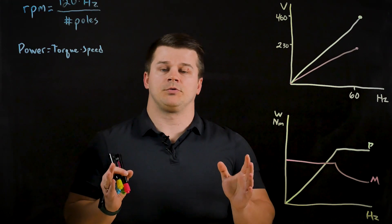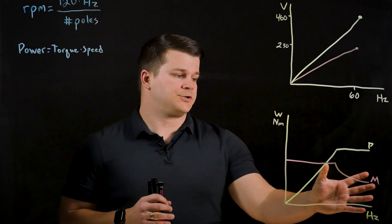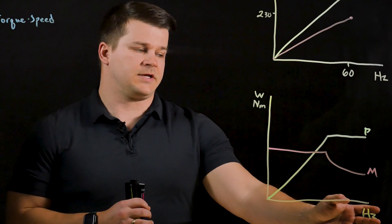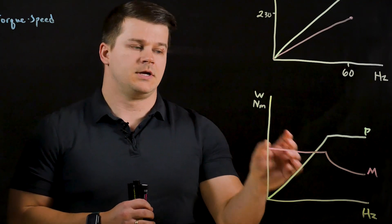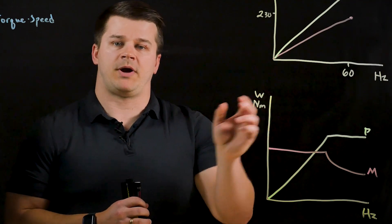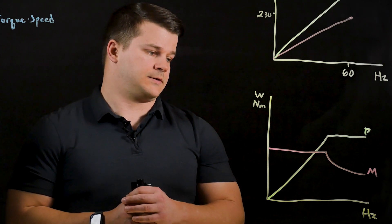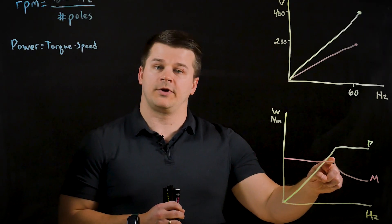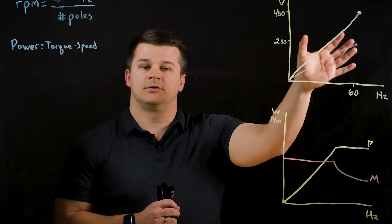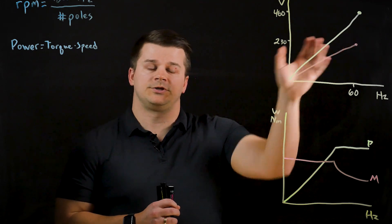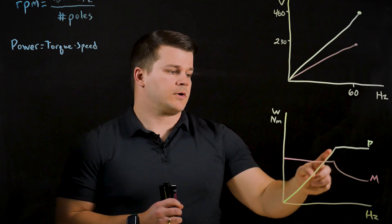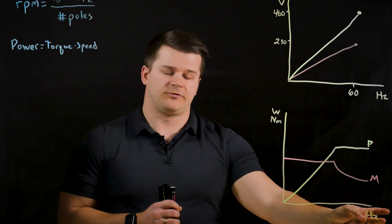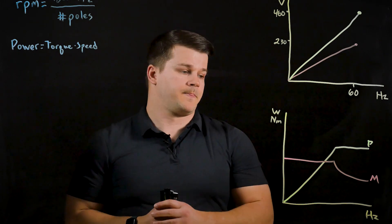All of this information is pulled together and shown on the power and torque curves. Again we have the frequency on the x-axis and this time we have power and torque on the y-axis. The torque is constant until the rated frequency because we're keeping the volts and Hertz ratio constant, and the power is increasing directly with the speed based on this equation.